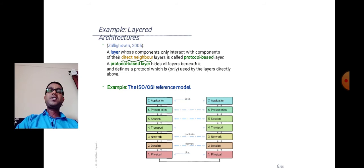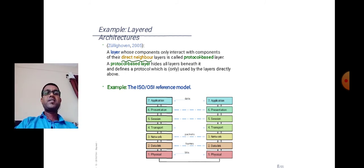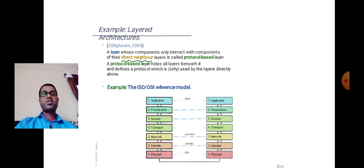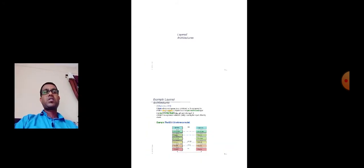The first layer is the physical layer, second is the data link layer, third is the network layer, fourth is the transport layer, fifth is the session layer, sixth is the presentation layer, and the seventh is the application layer. In this model, each layer's components only interact with components of their direct neighbor layers — this is called a protocol-based layer. A protocol-based layer hides all layers beneath it and defines a protocol used only by directly adjacent layers, as shown in the figure.